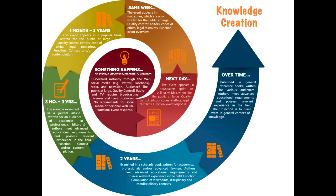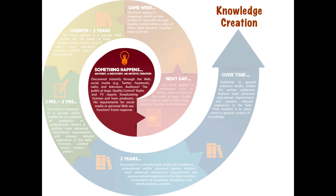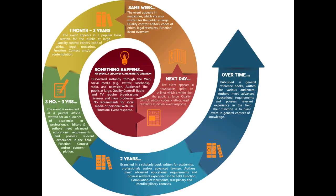This picture illustrates the knowledge creation process. What you see represented here is a typical event-related publication cycle. The center represents the topic, the event, the discovery, or the artistic creation. And the path shows how the topic becomes, through different kinds of interpretation, a part of our collective knowledge.